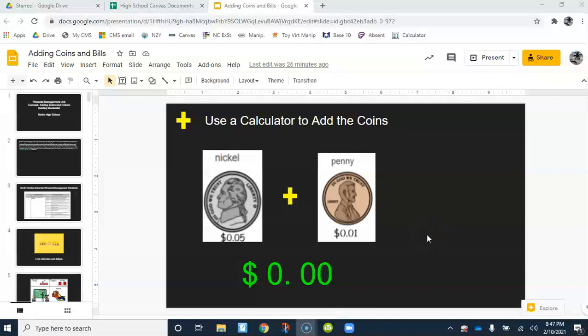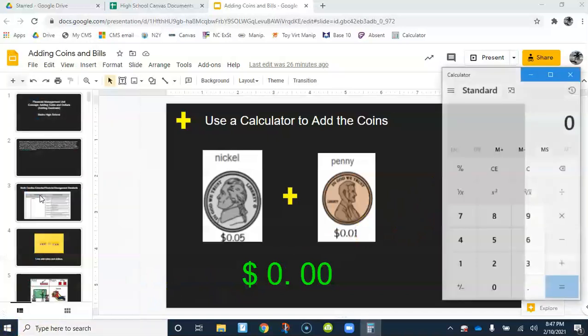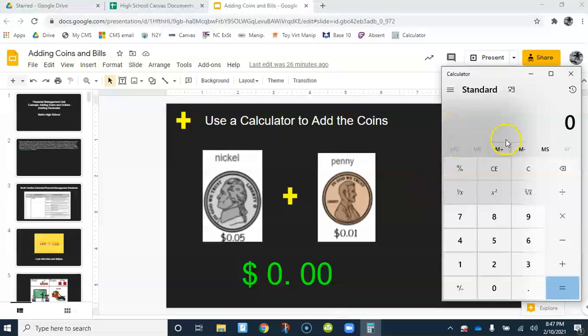So first, before you do anything, I'm on the slide where I want to use the calculator. You can be anywhere. But go down to the Windows Start button, and under C for calculator, there you go. It's going to pop it up onto your screen.